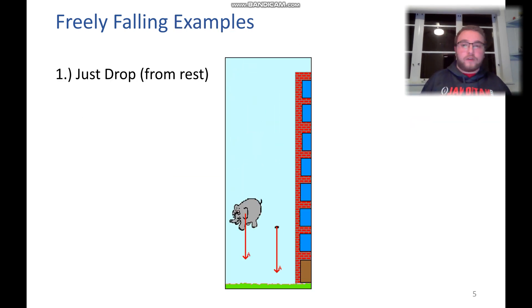Now let's look at some examples of free falls. The most simple one is something that's just dropped and it starts with an initial velocity of zero and it falls, like this elephant and I guess this is some sort of coin or other object.